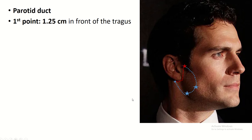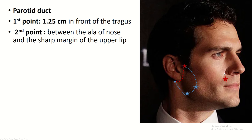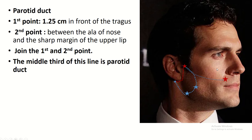Now the surface anatomy of the parotid duct: the first point is 1.25 centimeters in front from the summit of the tragus, and the second point is the midpoint between the ala of the nose and the upper border of the lip. Join the first and second points, and the middle third of this line is the parotid duct.